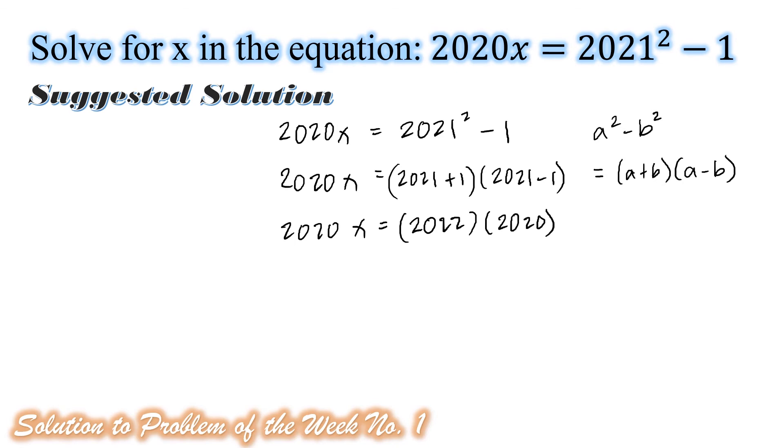Now, using division property of equality, we will divide both sides of this resulting equation by 2020. On the right-hand side, 2020 over 2020 is equal to 1. On the left-hand side, 2020 over 2020 is also equal to 1. Then, the resulting value for x is equal to 2022.